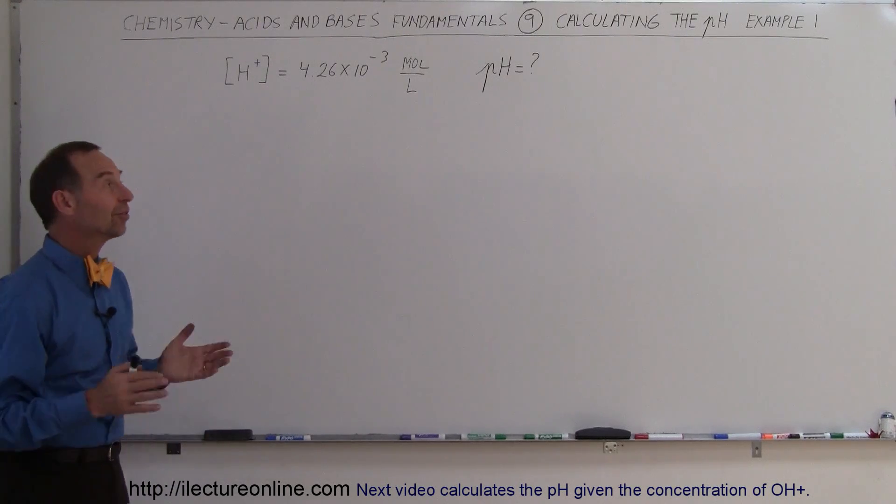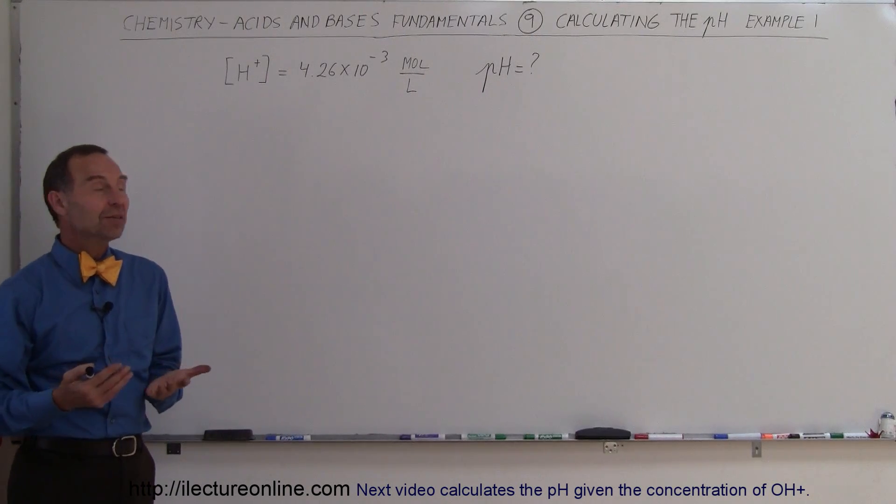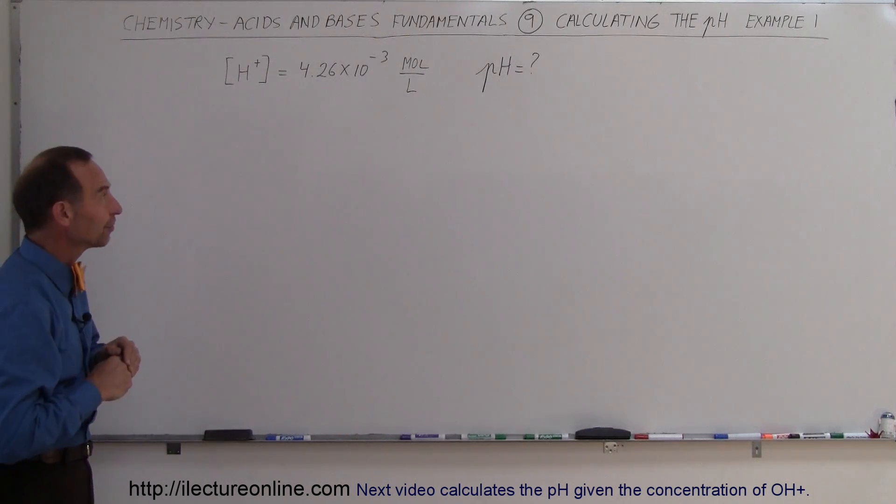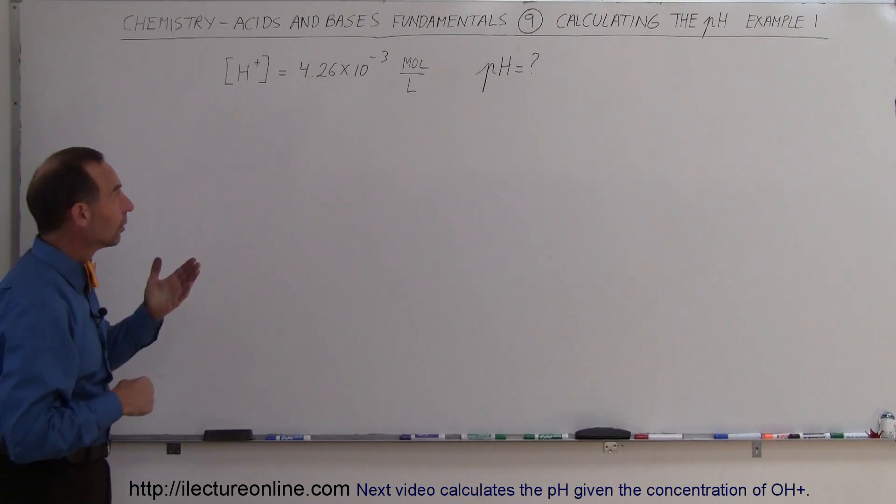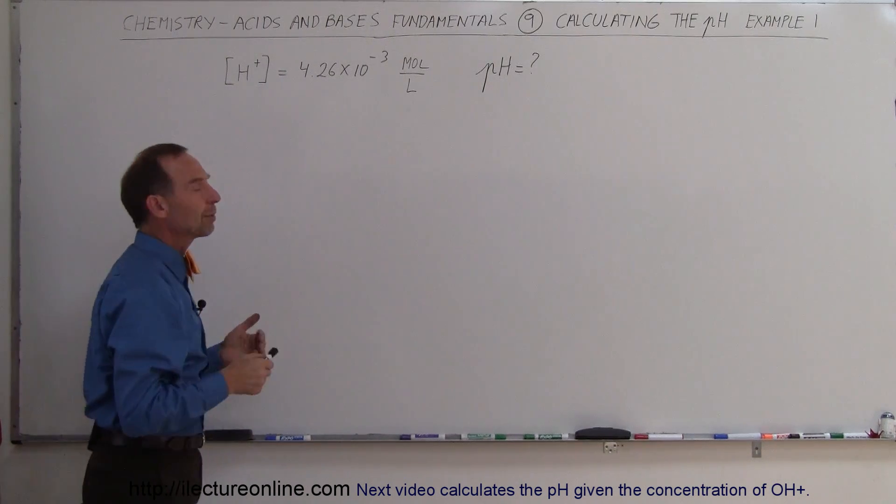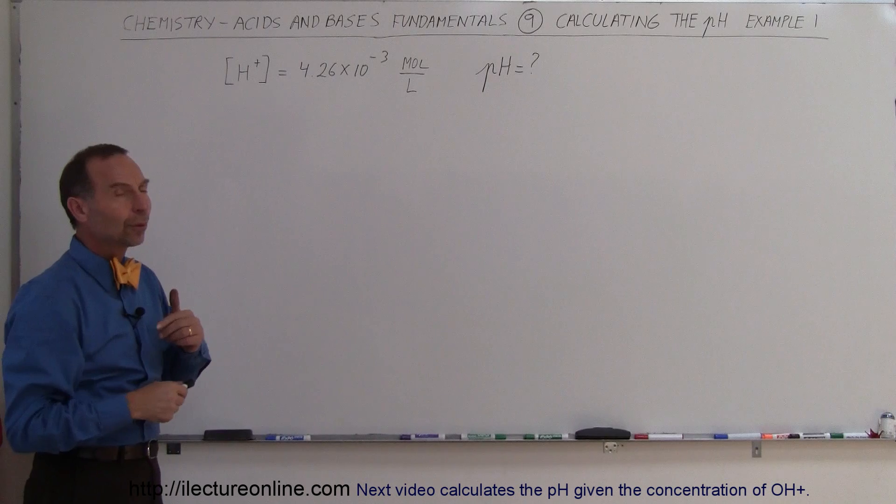Welcome to Lecture Online. Let's see if we can calculate the pH given the concentration of the hydrogen ion. Here's a quick example. We're given the concentration of 4.26 times 10 to the minus 3 moles per liter, and we need to find the pH.